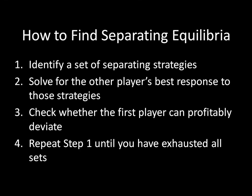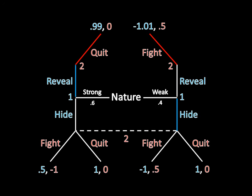Let's get to it. Let's start applying it to the game that we're looking at. We start off by trying to identify a set of separating strategies. Here's an example — the intuitive separating strategies you might think of in this sort of game, where the strong type is revealing and the weak type is hiding. These are separating because one type is only doing one thing, and another type is only doing another thing — those things are distinct. So that gives us a set of strategies.